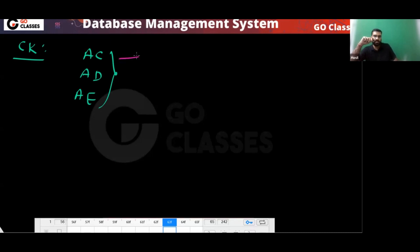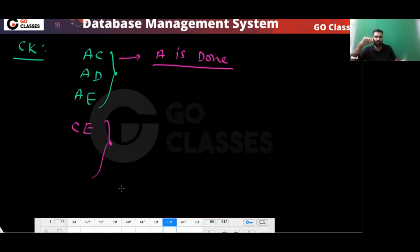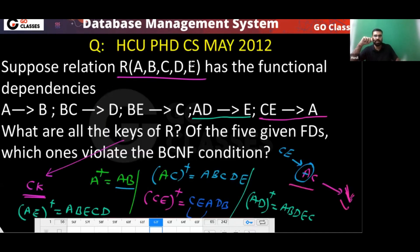A alone: A can determine B, B can determine C (via the chain), and AC can determine everything — so A is also a candidate key. A is done. Now let's check starting with C.